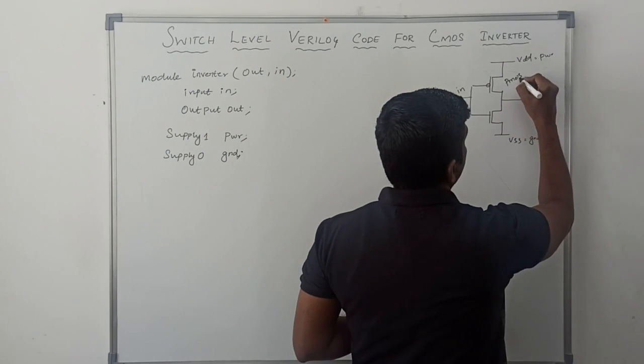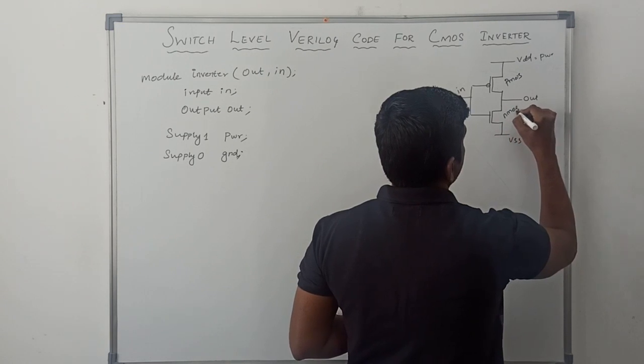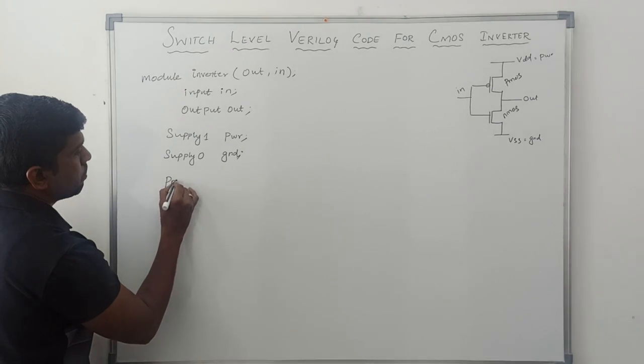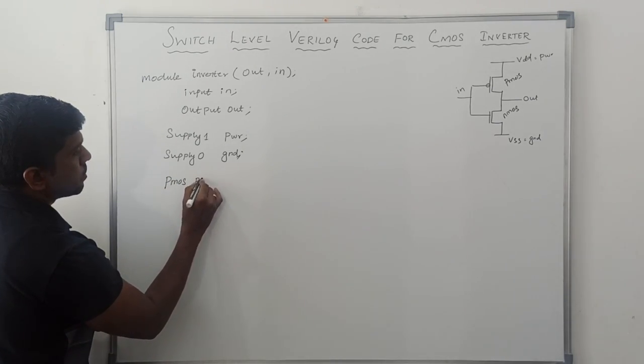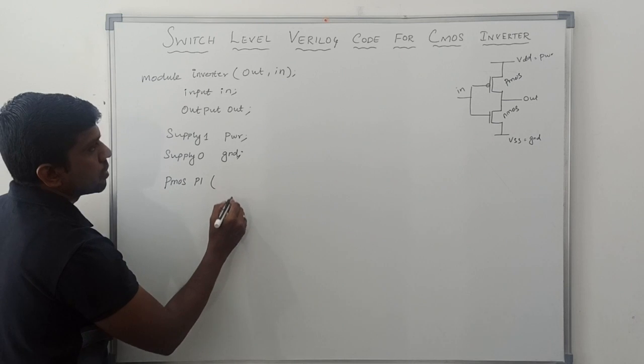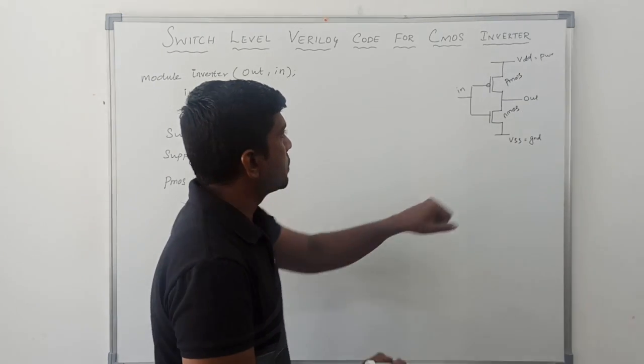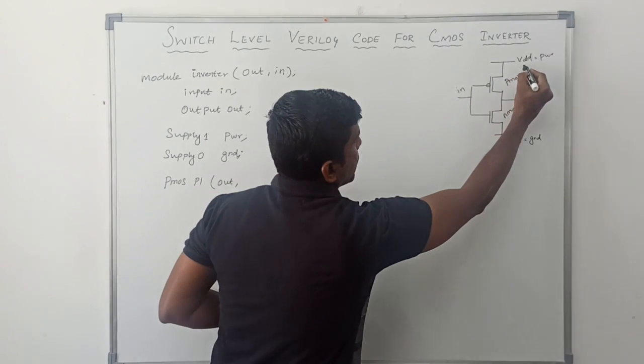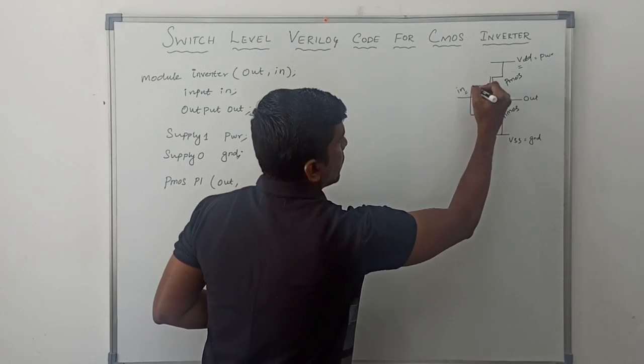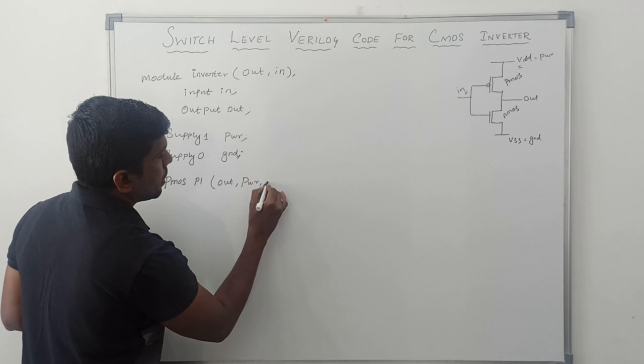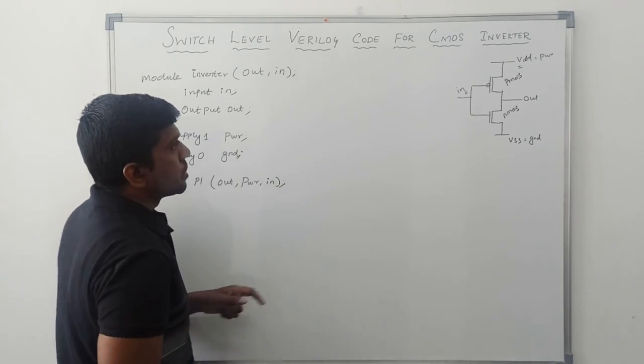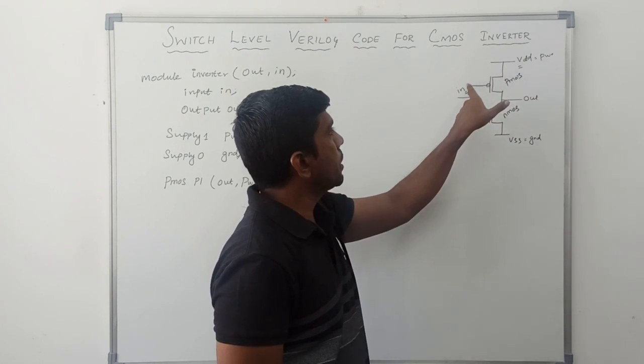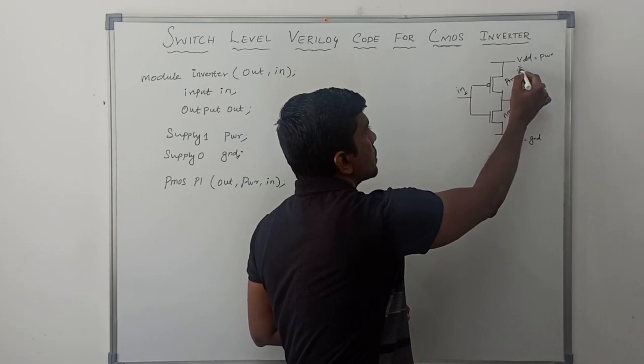PMOS - the output is out, then PWR and in. In this PMOS transistor, output and PWR in, these two are considered as the input, this one is the output.